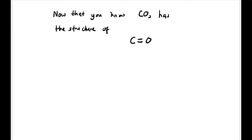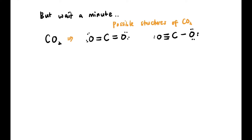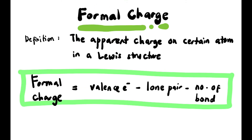Now, recall CO2 — we know it has C double bond O on both sides. But actually, CO2 could also be drawn as C triple bond O on one side and single bond O on the other side. We still prefer the double bond structure on both sides — and this relates to the concept of formal charge.